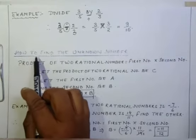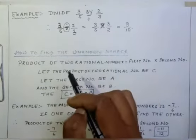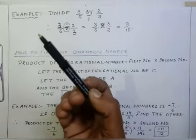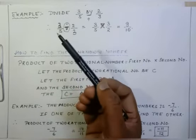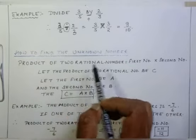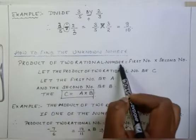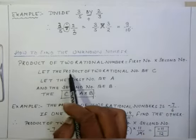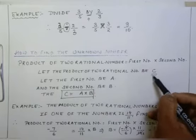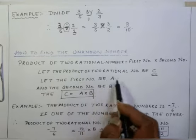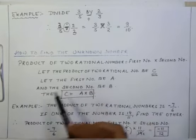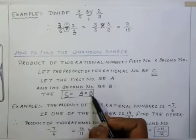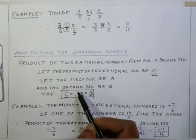I hope this much is clear to everyone. Let us come to another topic: how to find the unknown number. In this exercise, the product of two rational numbers is given to you and one rational number is given, and you have to find out the second rational number. The formula is: Product of two rational numbers equals first rational number into second rational number. Let the product be C, first rational number be A, and second rational number be B. Then C equals A into B.